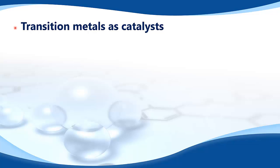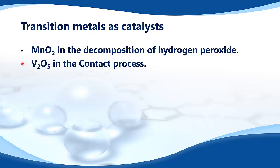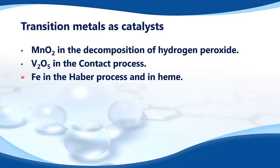Transition metals as catalysts. The examples you need to know about are manganese dioxide in the decomposition of hydrogen peroxide, vanadium pentoxide in the contact process, and iron in the Haber process and in heme.